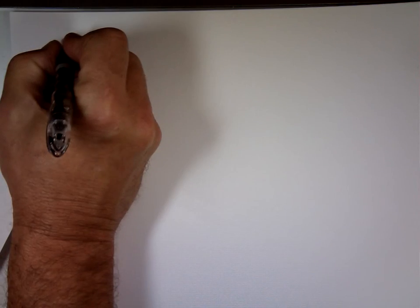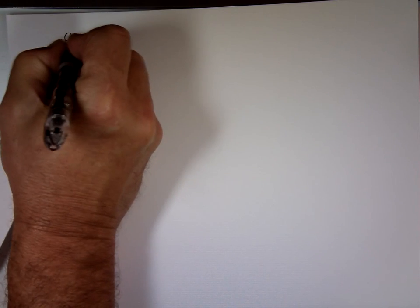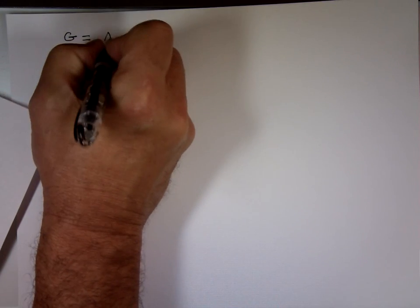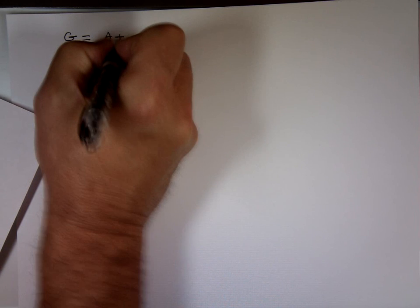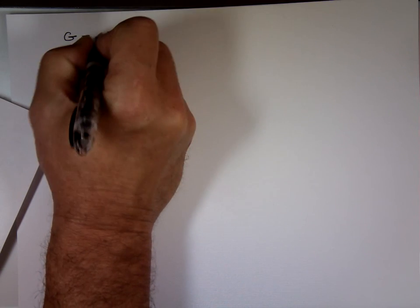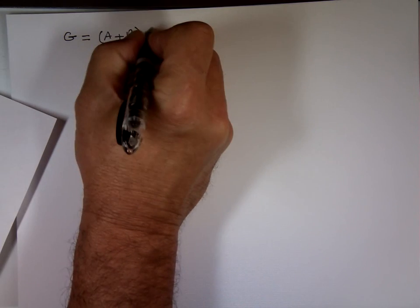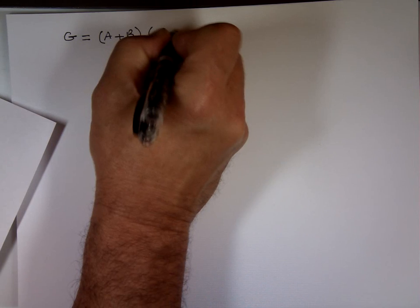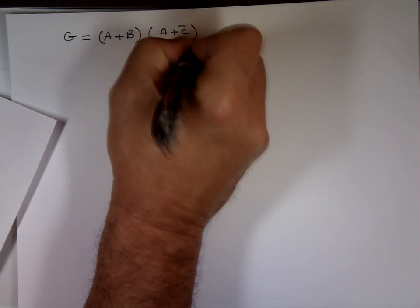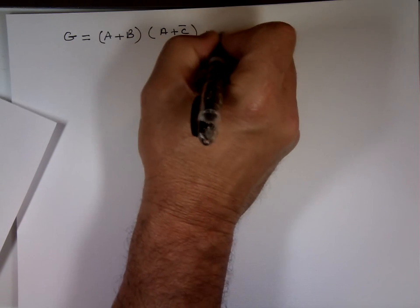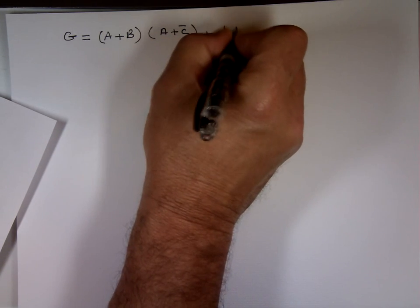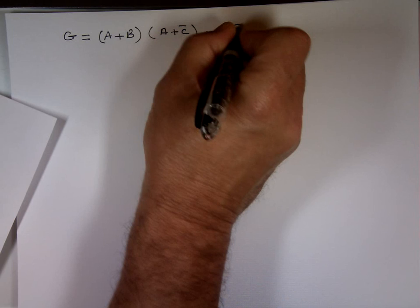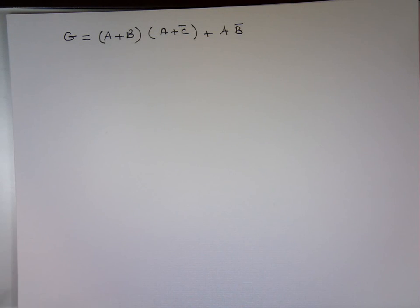So here's the example. G equals A plus B, times A plus C bar, plus A B bar. Now they want the truth table.